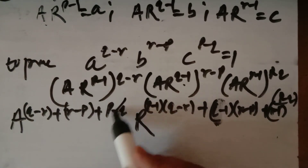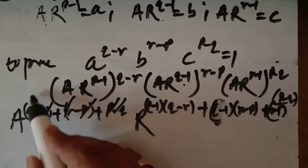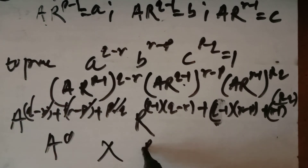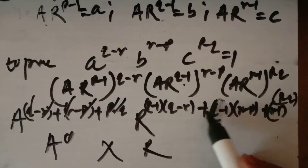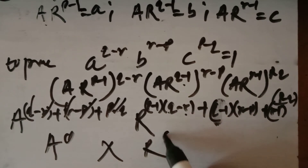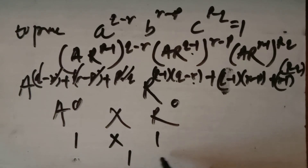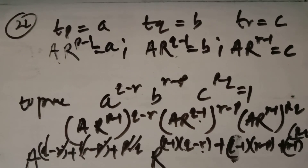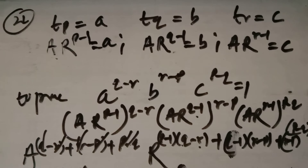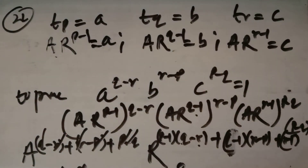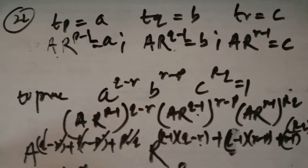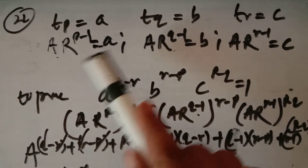Both the power of A and the power of R cancel out completely to zero when simplified. Therefore A^0 · R^0 = 1 · 1 = 1, which equals the right-hand side. This completes the proof for question number 22. The pth, qth, rth terms were expressed using first term capital A and common ratio capital R.